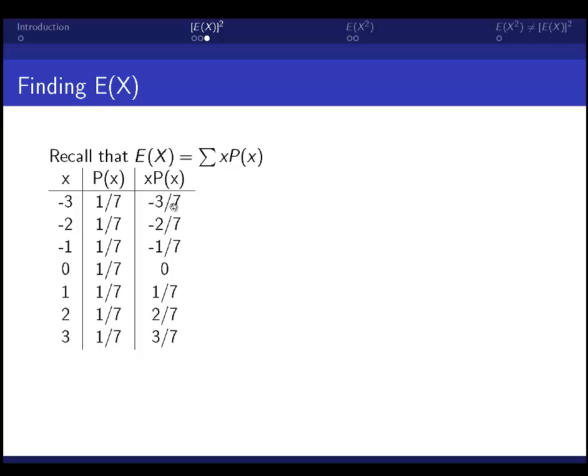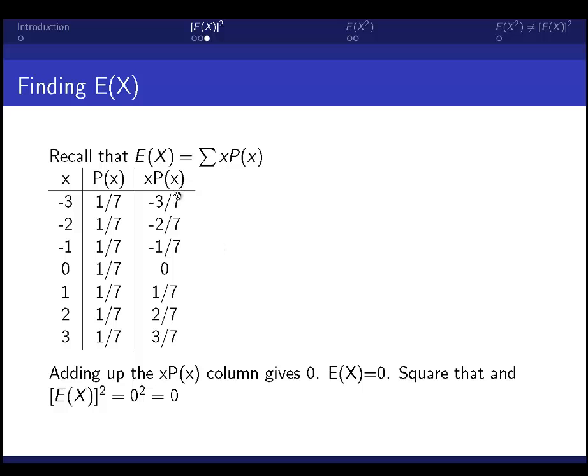If negative 3 happens 1 7th of the time, multiply that out, you get negative 3 7ths, and so on. So add up all the numbers in this column, and you get 0.